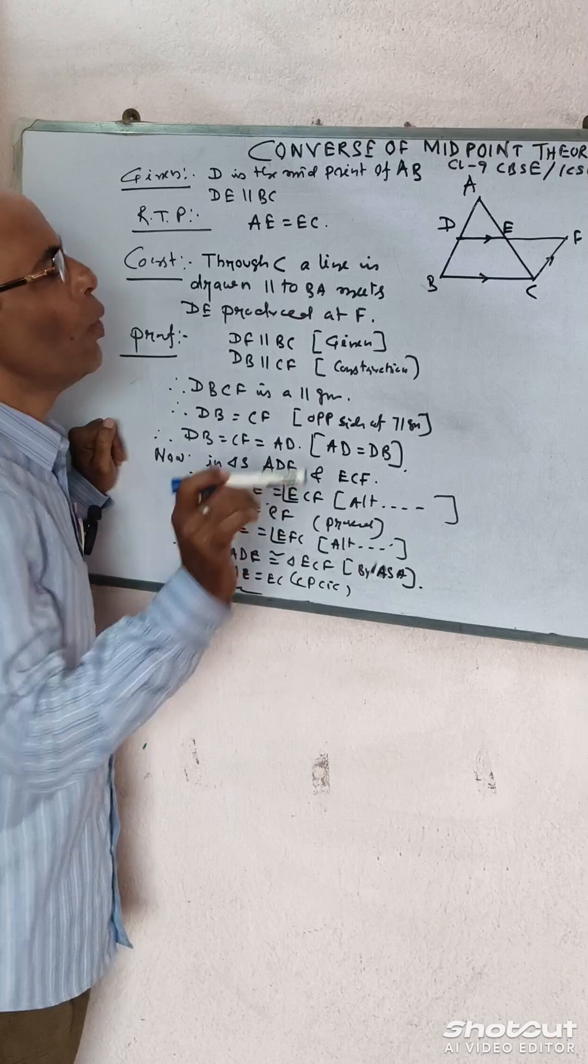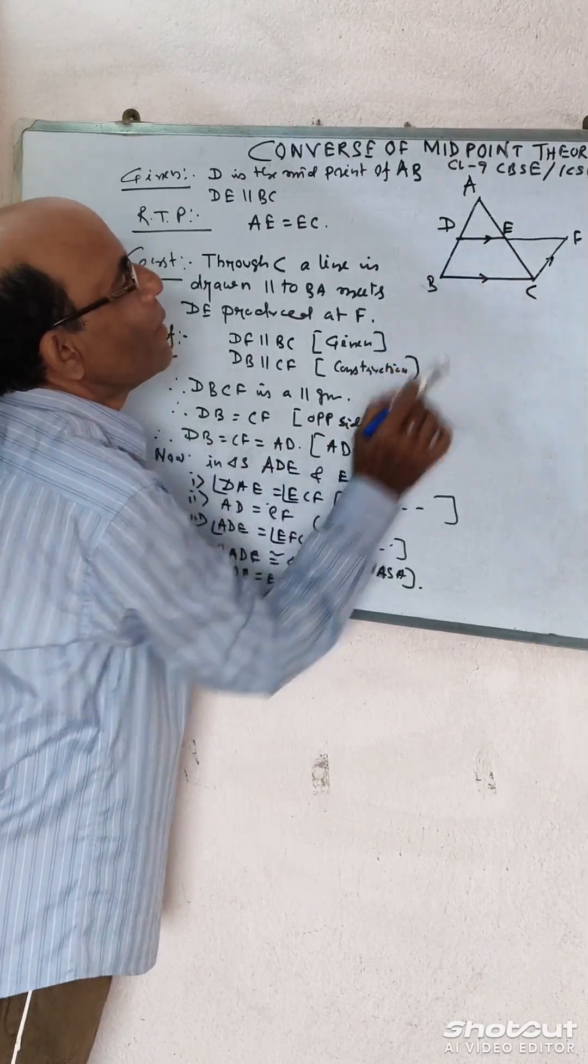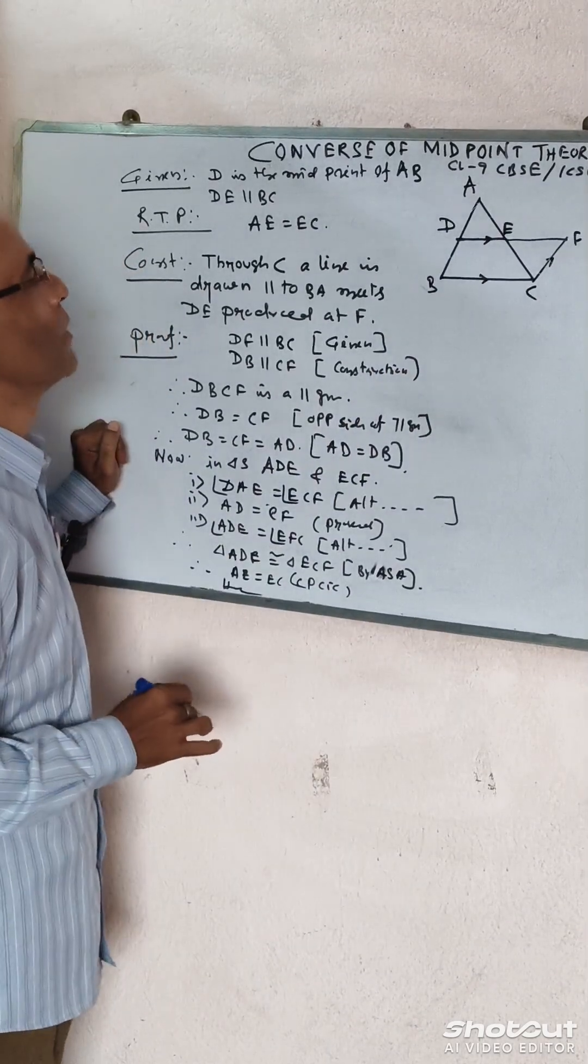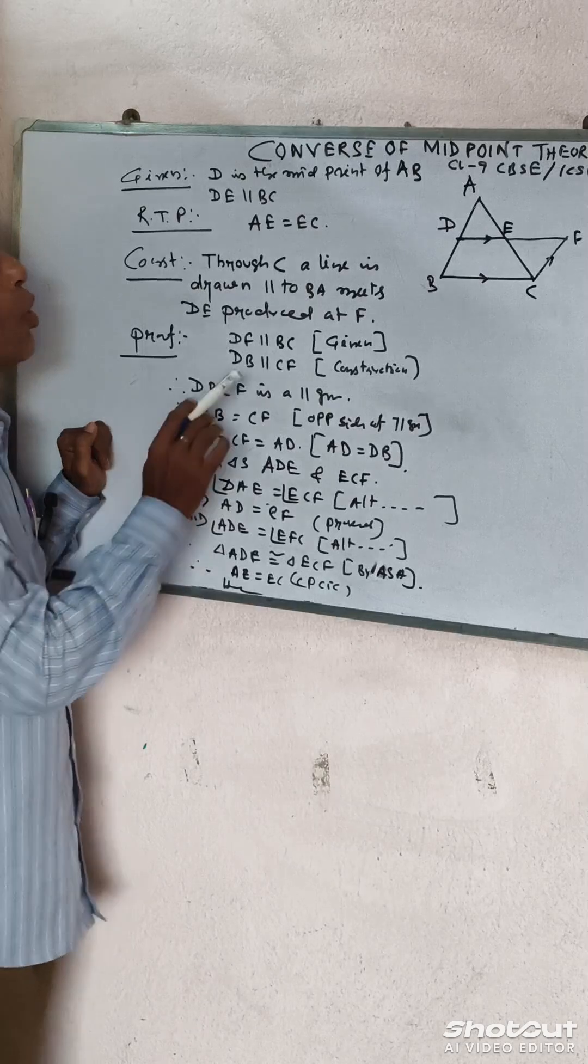You have to prove that AE is the midpoint of AC. First of all, you have to draw a construction.